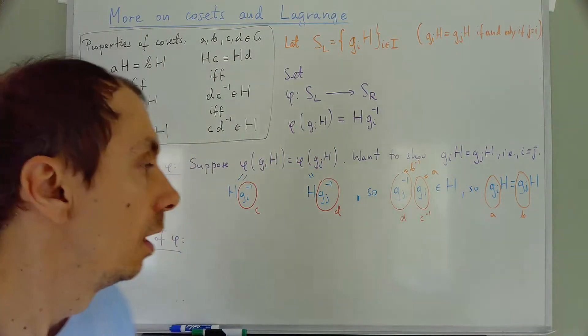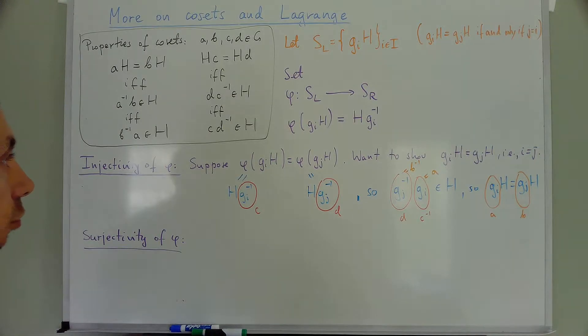So let's now show the surjectivity of phi. In other words, I want to show that I get every right coset as the image of phi.